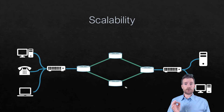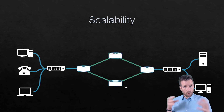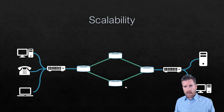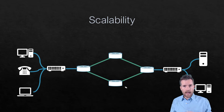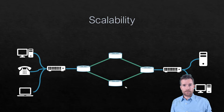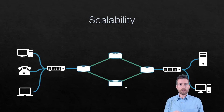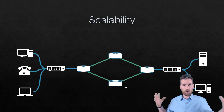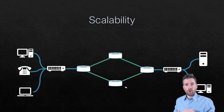We also need our networks to be scalable. Scalability is the ability to expand or possibly contract as demand grows or shrinks. Generally we see demand grow, but there are times when demand shrinks, and we need to be able to add more equipment, more bandwidth, or more capacity — or possibly subtract that depending on demand. We can either scale out (horizontal) or scale up (vertical).